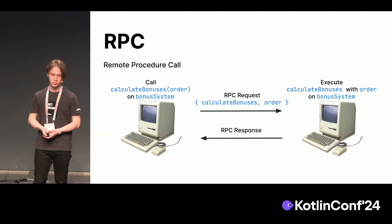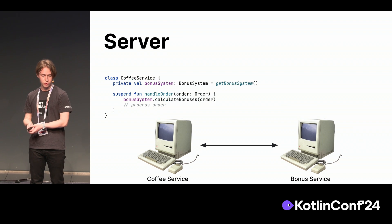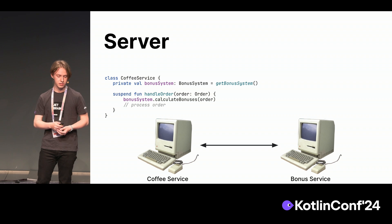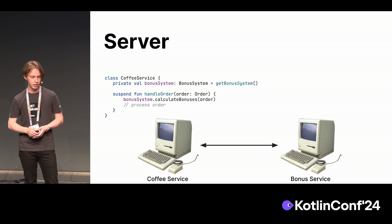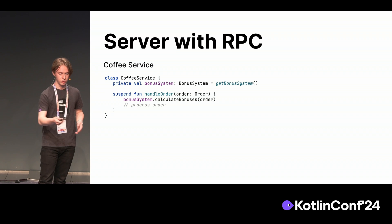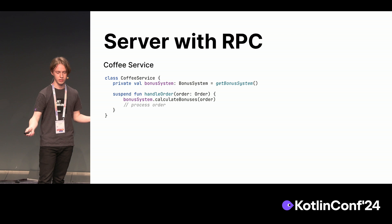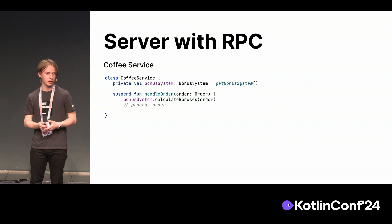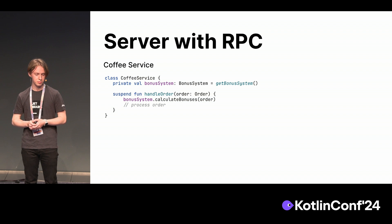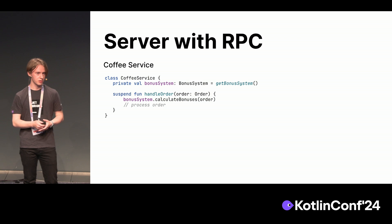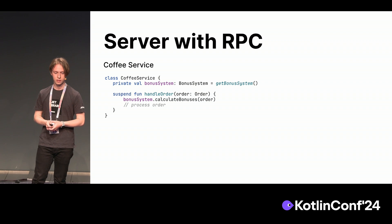You make an RPC request: you say I want to execute the calculate bonuses function with an order argument, and you execute this function on another machine and return a response. That's the basic idea for RPC. And in terms of Kotlin, it can ideally look something like this. We have our coffee service, our bonus service, they can communicate, and there is our coffee service class that has a bonus system. We just call this function — it's regular Kotlin code.